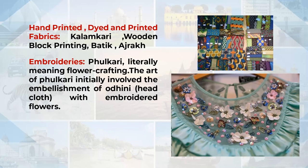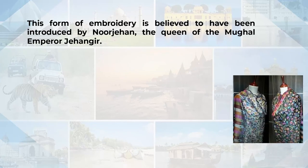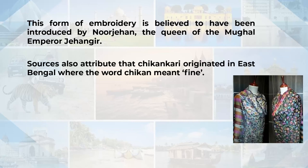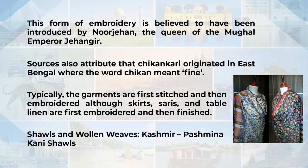The embroideries popular all over India include Phulkari, meaning flower crafting. This art initially involved embellishment of odhnis — the head cloth — embroidered with flower patterns. Over time, heavily embroidered odhnis called baag prints, meaning garden prints, came into vogue. Odisha is popular for Toran's applique work. The popular embroidery kusoti is believed to have been introduced by Noor Jahan, Queen of Mughal Emperor Jahangir. Chikankari originated in East Bengal where the word chikan meant fine; garments are first stitched and then embroidered through skirts, sarees and table linen. Kashmir's pashmina kari shawls and woolen weaves are also very popular.